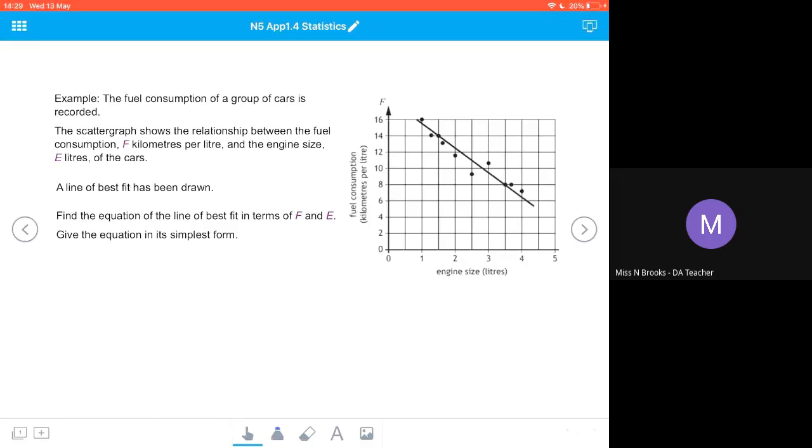First, we write down the equation of a straight line: y equals mx plus c. Because we want to give our line in terms of f and e, we can say that f, which labels the y-axis, equals m times e, which labels the x-axis, plus c.